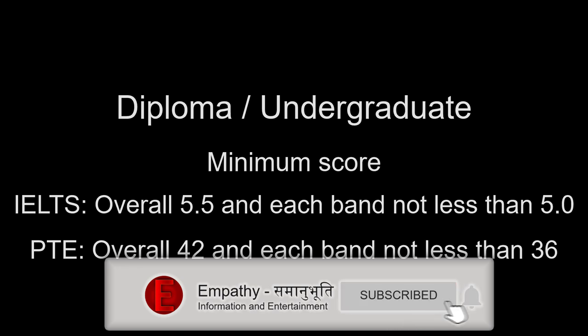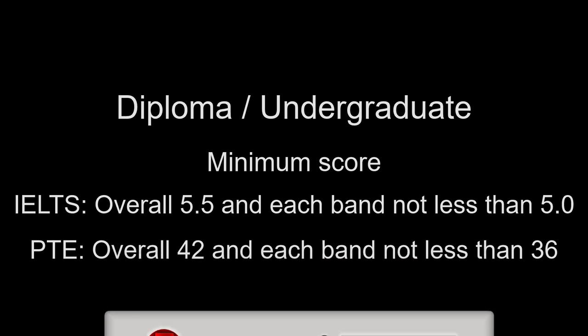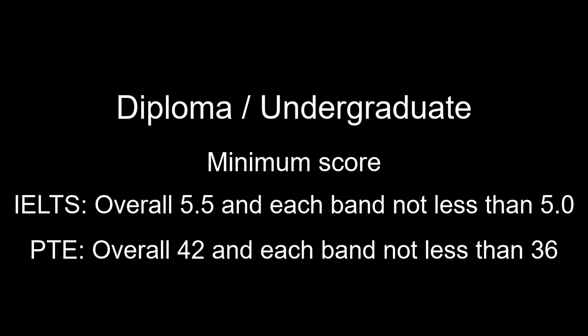If you are able to achieve these scores, you will meet the minimum criteria set by the Australian Immigration Department to apply for a study visa in Australia, but there is no guarantee that all universities will accept these scores. There are few universities which accept these minimum scores, but many universities in Australia demand a higher overall score than 5.5. Additionally, it also depends on the course you want to enroll into.